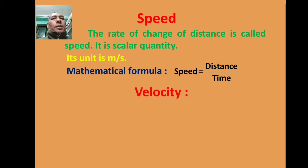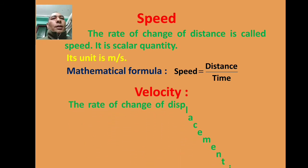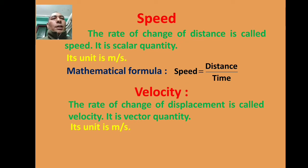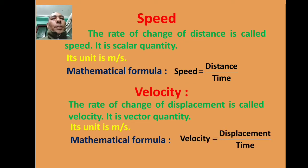Velocity: The rate of change of displacement is called velocity. It is a vector quantity. Its unit is meter per second. Mathematical formula: Velocity equals displacement divided by time.